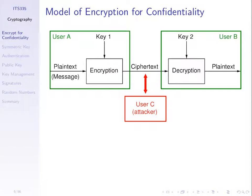If user C did know the key, they know the ciphertext, and with the key they can do the same as user B and decrypt. We want to make it such that user C cannot decrypt — that's the goal. We also assume that user C knows the cipher used by A and B. They know what algorithm is being used to encrypt and decrypt. They don't know the key, but they know the algorithm. So the challenge for the attacker is: given the ciphertext and the algorithm, but not the key or plaintext, find them.